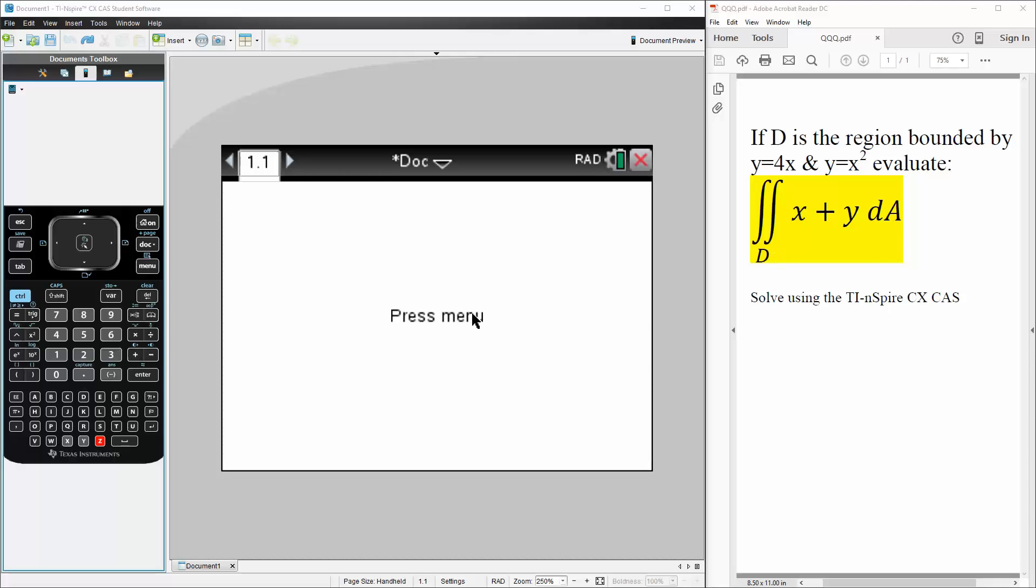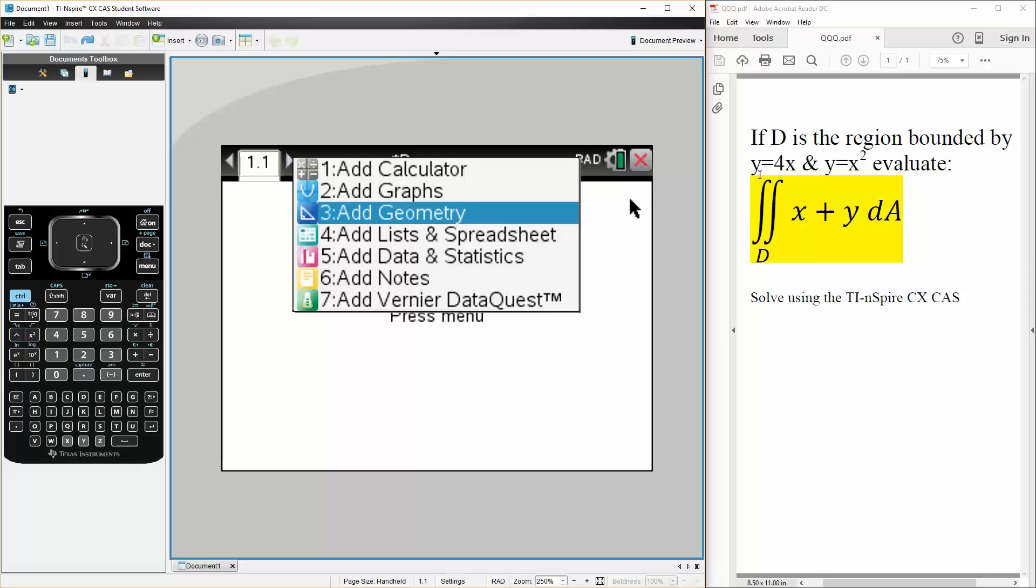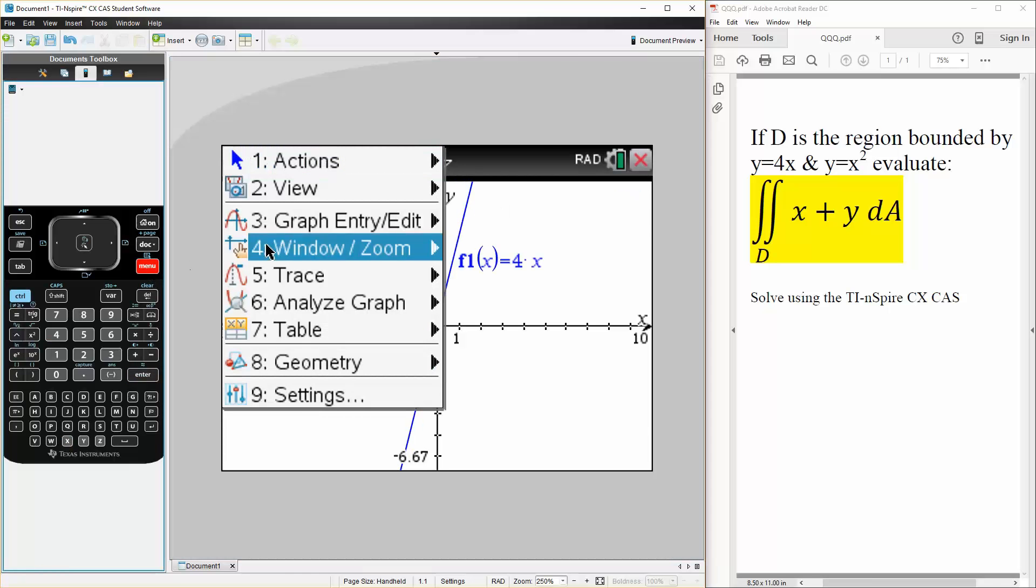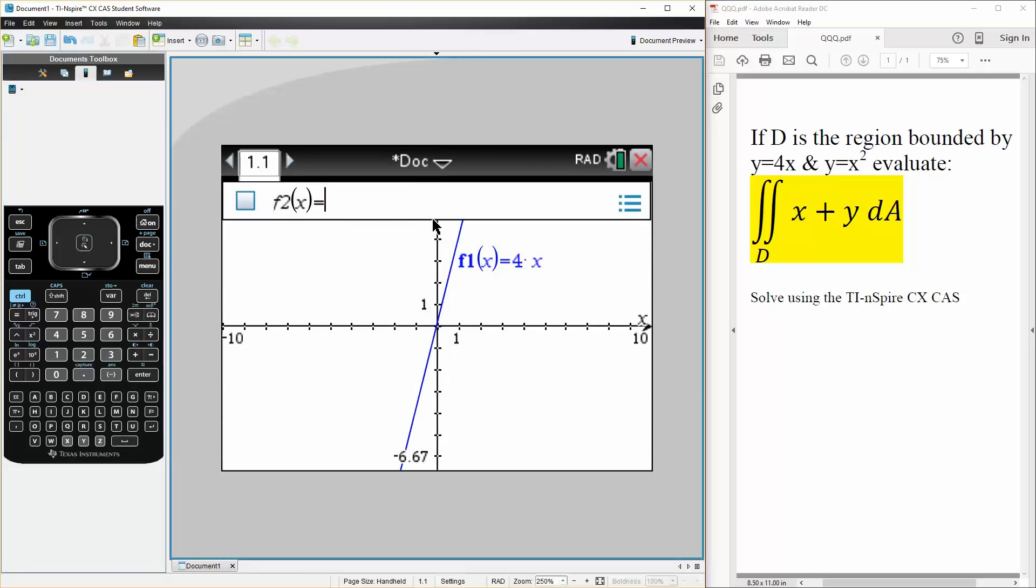And so the first thing we're going to do is graph what we have, the functions 4x and x squared, to see if there's any intersection. So one is 4x, and then we'll hit menu, graph, function. The other is x squared.